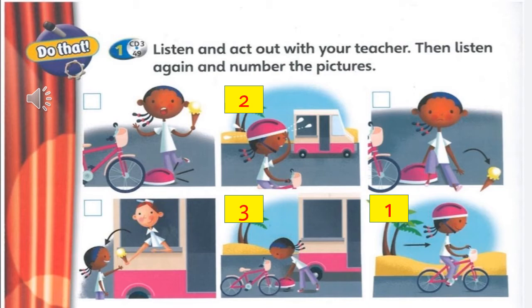Four: Get a big ice cream. Mmm. Five: You trip over your helmet. Oh. Six: Goodbye ice cream. Aww.